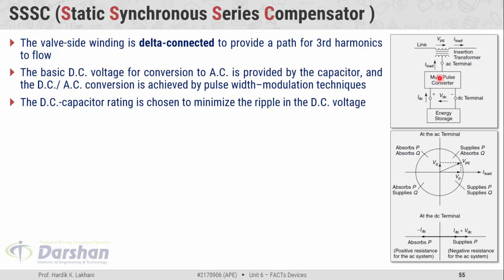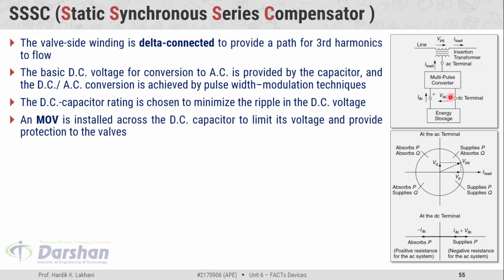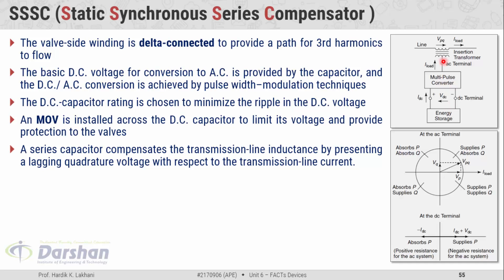While designing the SSSC, the rating of the DC capacitor should be chosen such that when AC is converted into DC using the multiples converter, that DC would contain less ripple. An MOV, also known as the metal oxide varistor, is installed across the DC capacitor to limit its voltage and provide protection to the valves. The metal oxide varistor serves two purposes: limiting the voltage appearing across the capacitor and providing protection to the valves of the multiples converter. In the power exchange diagram, the line current is taken as the reference.